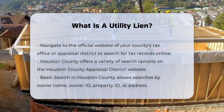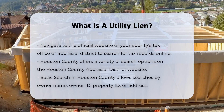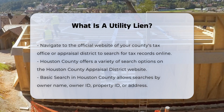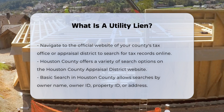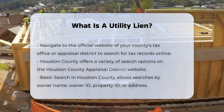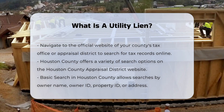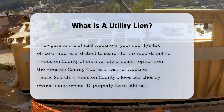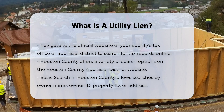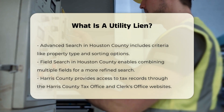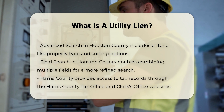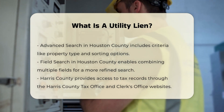When can a utility lien be filed? A utility lien can be filed if the payment of utility user fees is delinquent for more than 90 days. Before filing the lien, the city or town must provide written notice to the property owner at least 30 days in advance. This notice must include an opportunity for a hearing with a designated city or town official and must be personally served or mailed to the property owner's last known address.